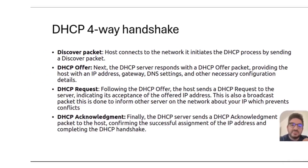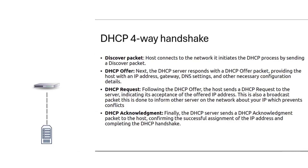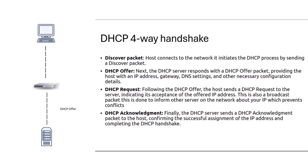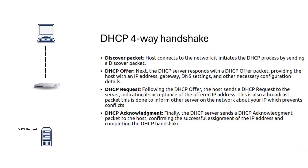In this diagram we have a DHCP server connected to a switch. When a host connects to the network it initiates the DHCP process by sending a Discover packet, which is a broadcast, and the switch sends it out all interfaces. The server responds with a DHCP Offer providing the host with an IP, gateway, DNS settings, and all other necessary configuration. The host then sends a DHCP Request indicating it's accepting the offered IP — also a broadcast, done to inform other servers to prevent conflicts. Finally, the server sends a DHCP Acknowledge packet confirming successful IP assignment. You can use the acronym DORA to memorize the four steps.